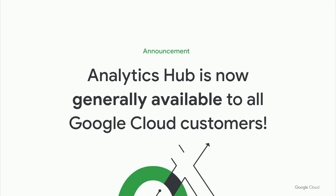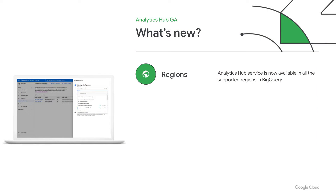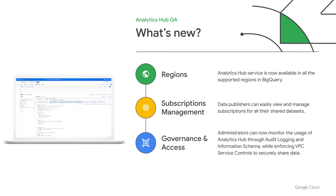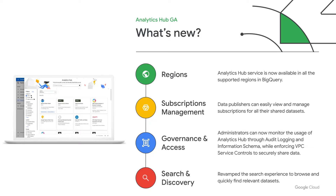Today we are officially announcing the general availability of Analytics Hub. We've come a long way since we announced this product last year. Here's what's new: the product now supports over 30 different regions and multi-regions in BigQuery, enabling publishers to deliver shared data sets to the regions requested by subscribers. Data publishers can now view and manage subscribers for all their shared data, and revoke access to subscriptions at any time. Administrators now have access to audit logging and information schema to track job statistics. We've also made improvements to the search and discovery experience, making it easy for subscribers to filter, sort, and find relevant data.